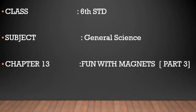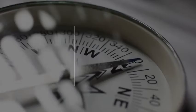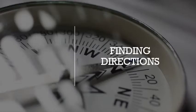In Part 1 and Part 2 of this lesson, we learned about how magnets were discovered and what are the magnetic and non-magnetic substances. We also learned about the poles of the magnet — how the magnet has a north pole and a south pole.